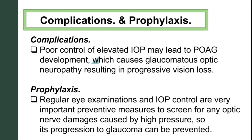Poor control of elevated intraocular pressure may lead to primary open-angle glaucoma development, which causes glaucomatous optic neuropathy resulting in progressive vision loss. For prophylaxis, regular eye examinations and intraocular pressure control are very important preventative measures to screen for optic nerve damage caused by high pressure, so that progression to glaucoma can be prevented. Medications that reduce intraocular pressure were covered in the previous video on primary open-angle glaucoma.